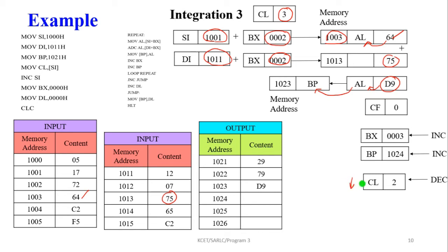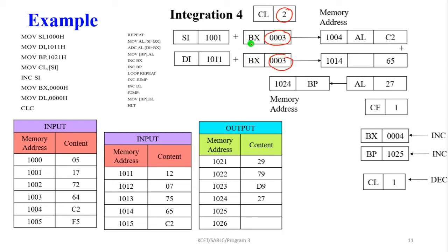BX and base pointer are incremented, CL is decremented. Fourth iteration: CL is 2, byte pointer is 0003. Memory locations 1004 and 1014. Address 1004 contains C2, moved into AL. Address 1014 contains 65. Adding C2 + 65 gives 27, with carry stored in the carry flag. AL contains 27, moved into memory location 1024.